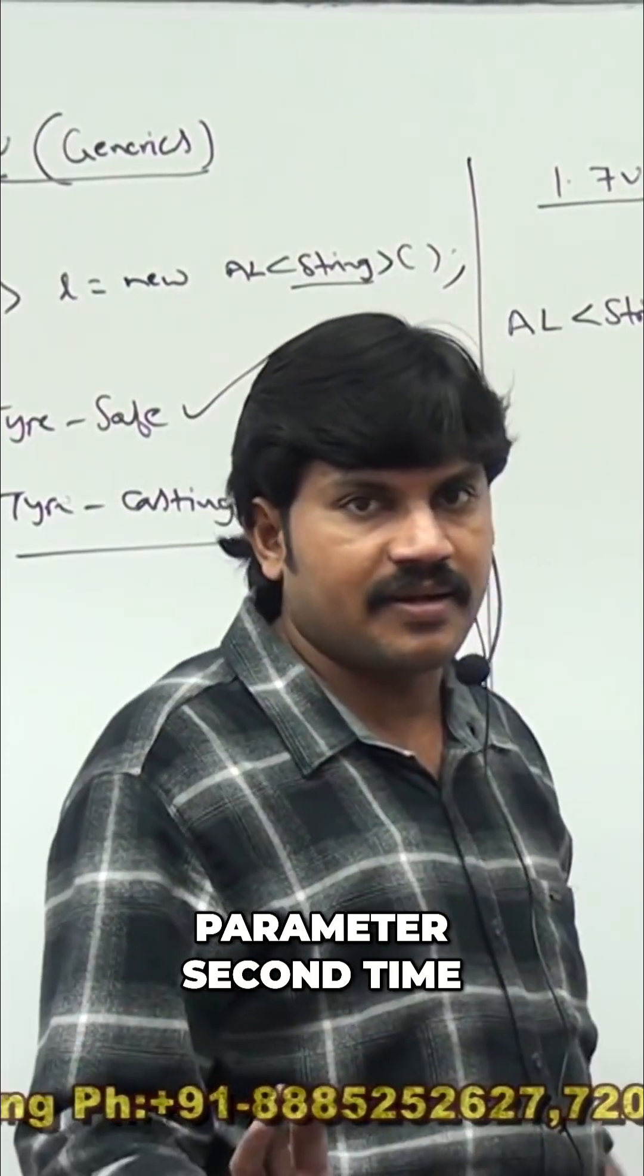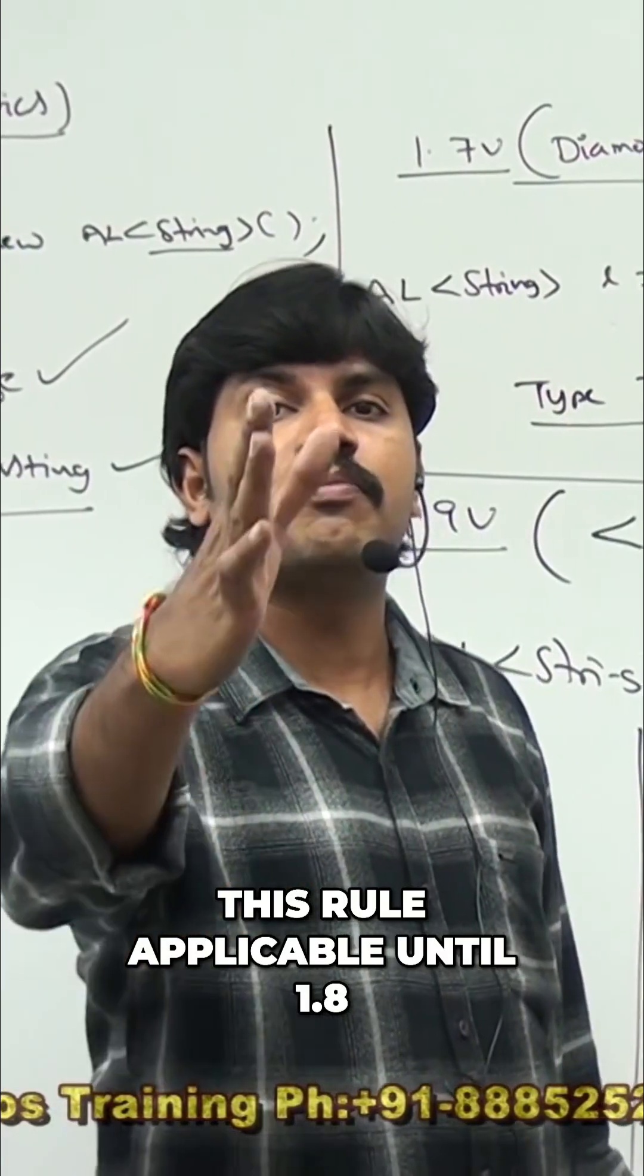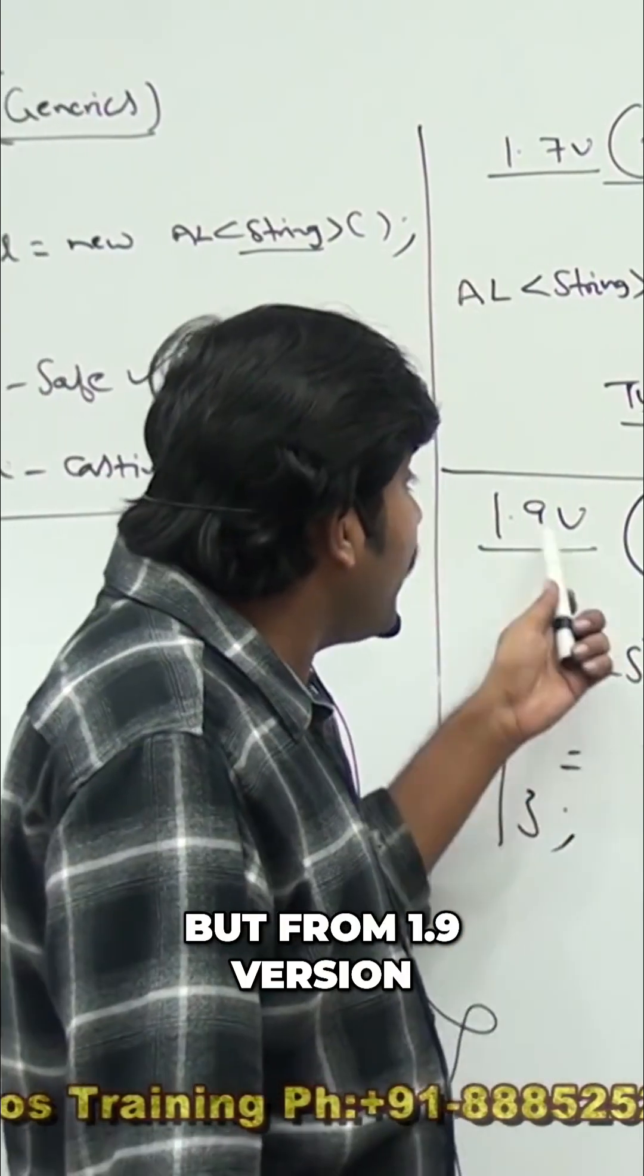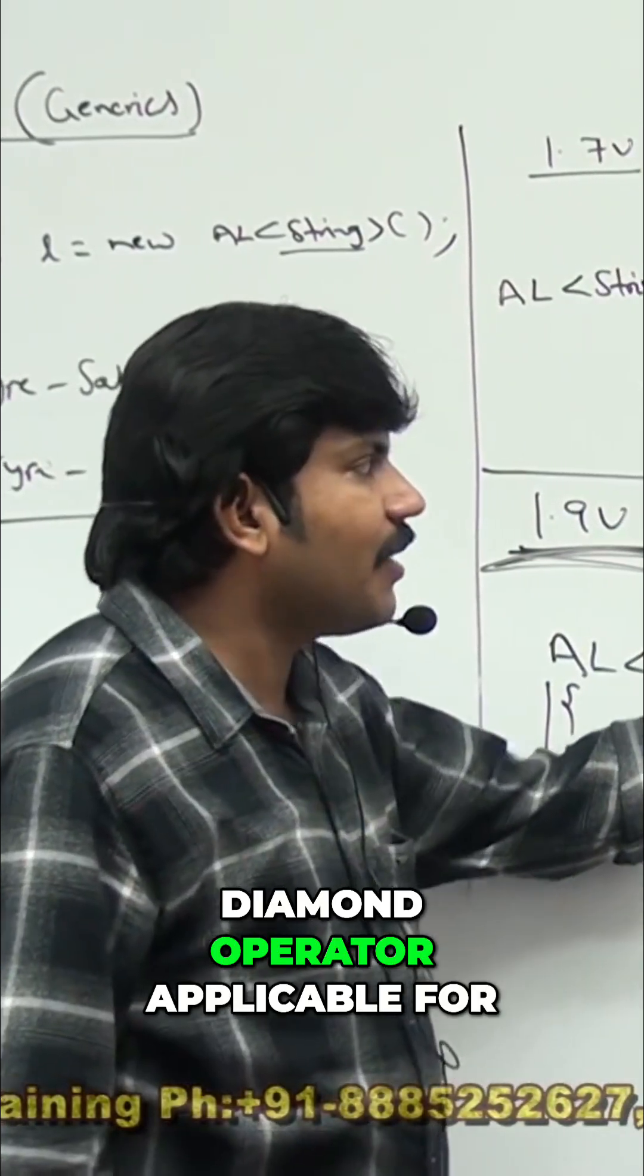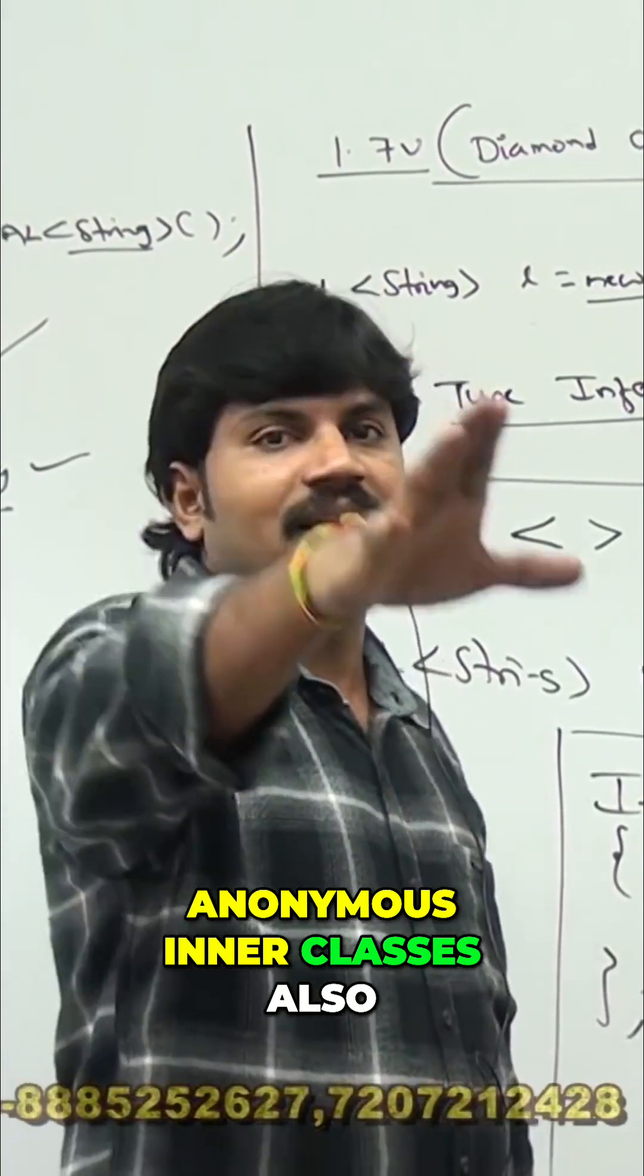This rule applicable until 1.8, but from 1.9 version diamond operator applicable for anonymous inner classes also.